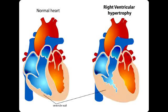What lab or diagnostic finding is observed with Tetralogy of Fallot or Right Ventricular Hypertrophy? In Tetralogy of Fallot or Right Ventricular Hypertrophy, you see a boot-shaped heart on x-ray.